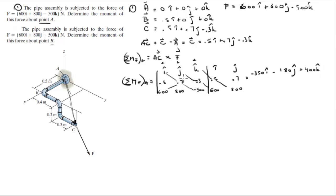And then you do your negative diagonals. 600 times 0.7 times K is negative 420K because it's a negative diagonal. 800 times negative 0.3 times I is positive 240I, and negative 500 times 0.5 times J times negative is positive 250J. So when you add this up, you get that the moment is negative 110I plus 70J minus 20K. Final answer for the first part.